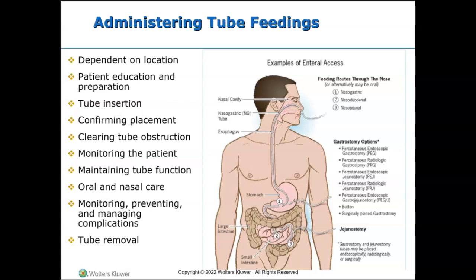Nasal or oral tubes may be placed at the bedside, with endoscopy, or surgically. A nasoenteric tube enters the nose and the distal end may be in the stomach, in the duodenum — the first part of the small intestine — or in the jejunum, the second part of the small intestine. We also have gastrostomy and jejunostomy tubes, which are inserted through the skin percutaneously, where the surgeon makes a small incision in the upper abdominal wall and inserts the tube through the abdominal wall. This may be done by a radiologist with x-ray guidance, by endoscopy, or surgically.